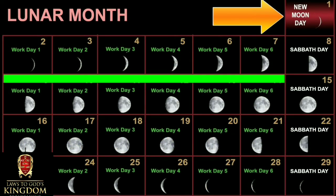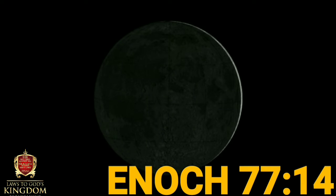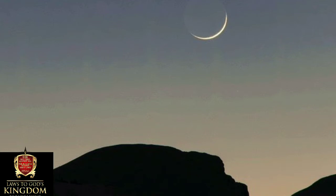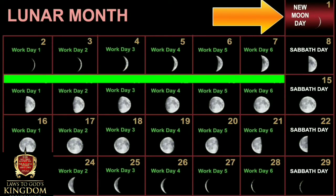So New Moon Day is when the moon is 100% dark. Then in the evening, the first tiny crescent comes in. If on the New Moon Day you couldn't see the first crescent, that means the next day is also a New Moon Day. Sometimes there's one day New Moon and sometimes there are two days. When the moon is completely dark, that's the New Moon Day. On that day in the evening, light will come in and the next day will be the first work day. This is how you determine the New Moon Day — what we see with our own eyes.